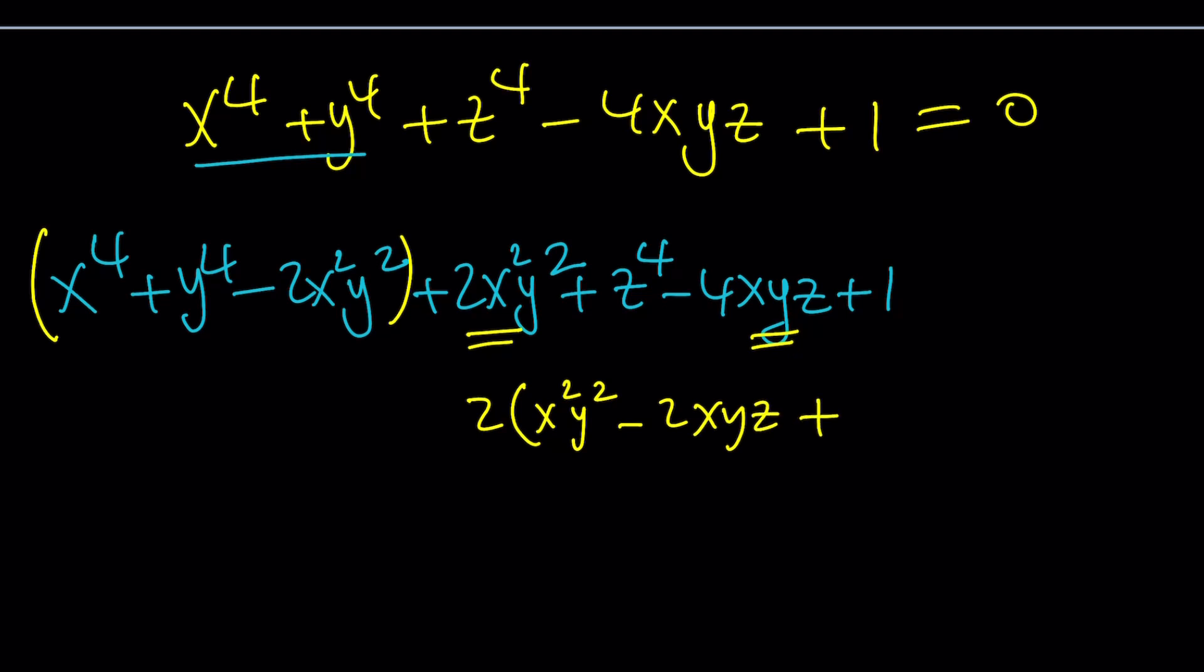And the answer would be z squared. And the reason for that is because this becomes xy minus z quantity squared. Of course, with the 2 in the front, which means we have to add 2z squared. And of course, subtract it. Make sense? So we're going to follow up with 2z squared minus 2z squared. We just add and subtract.